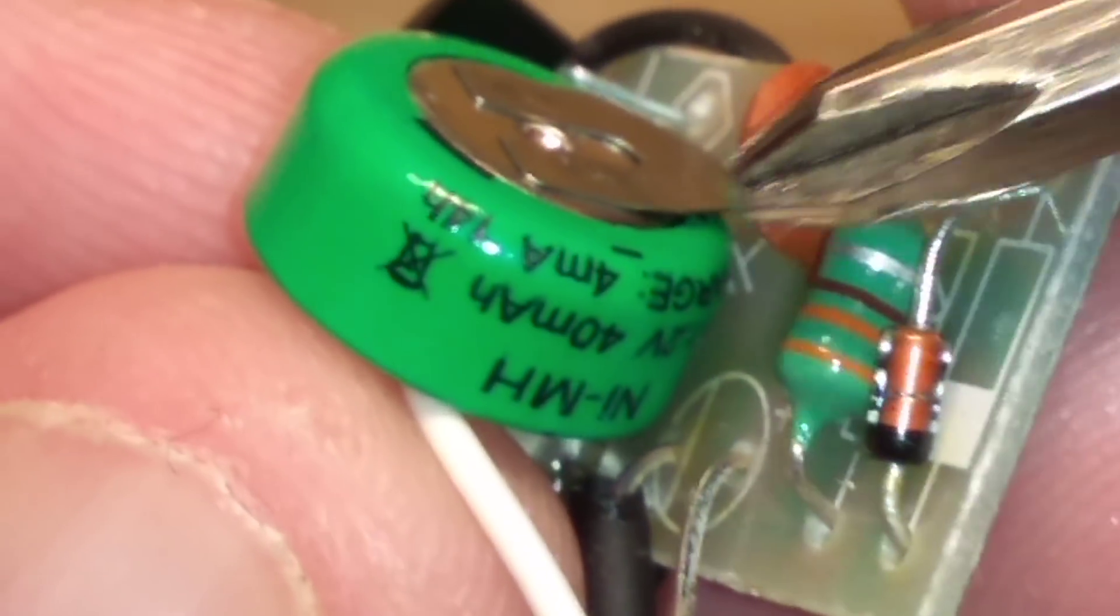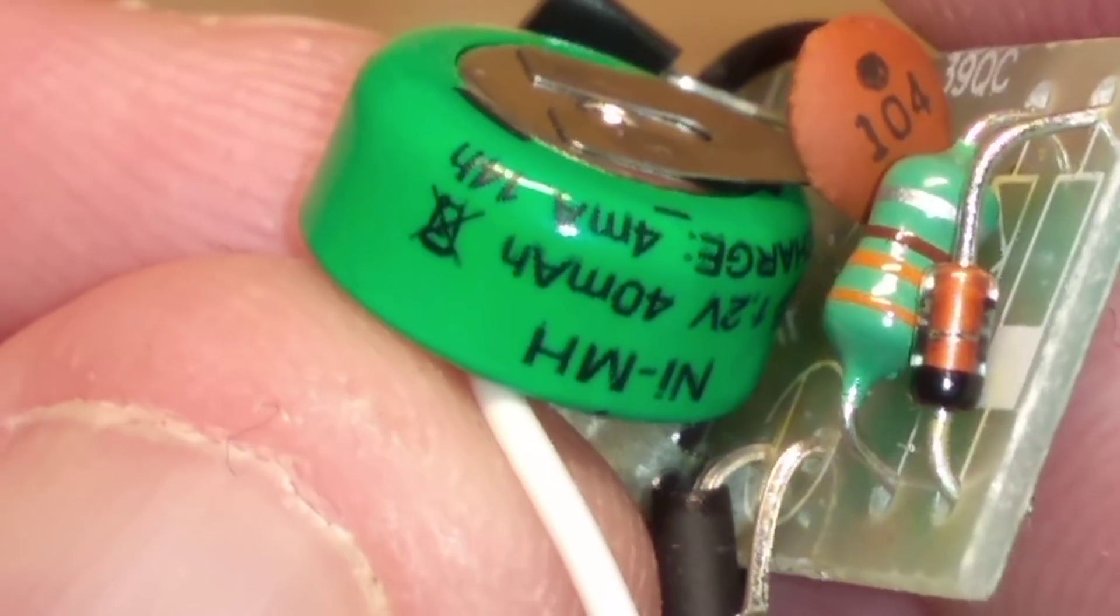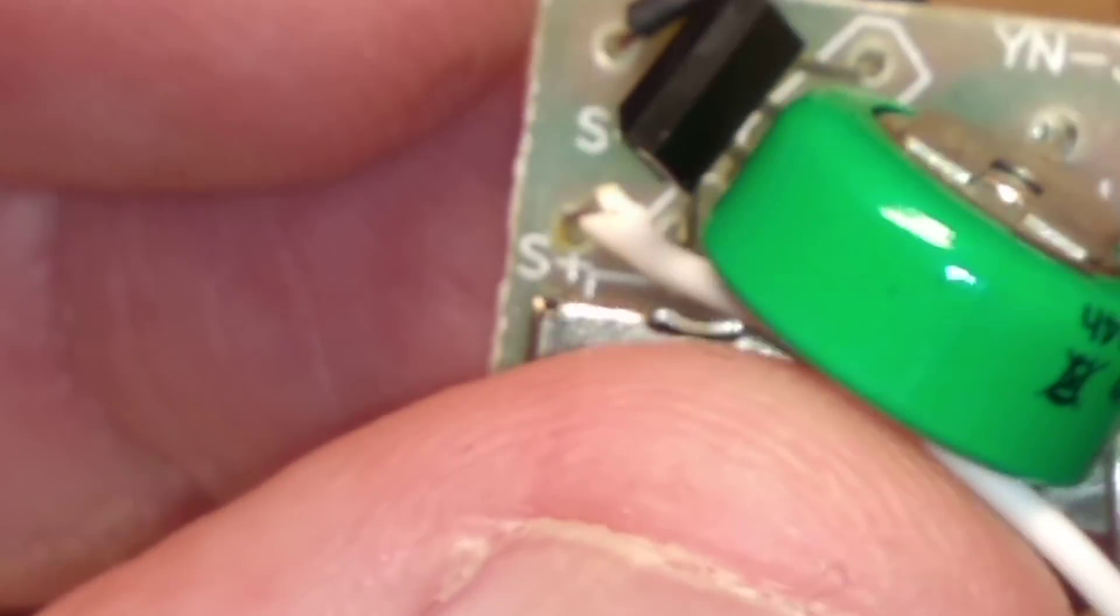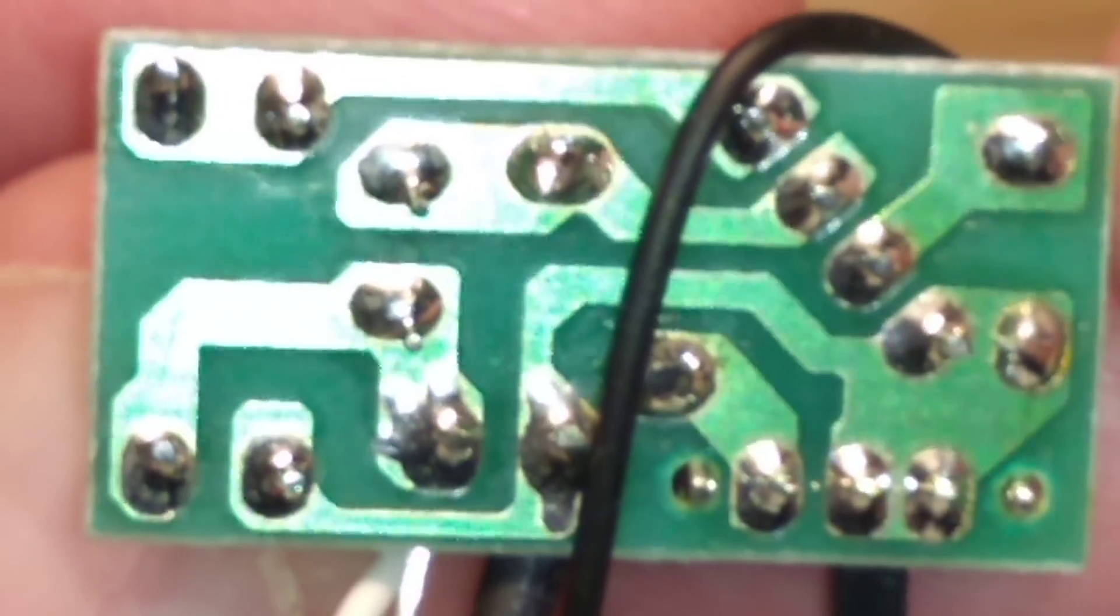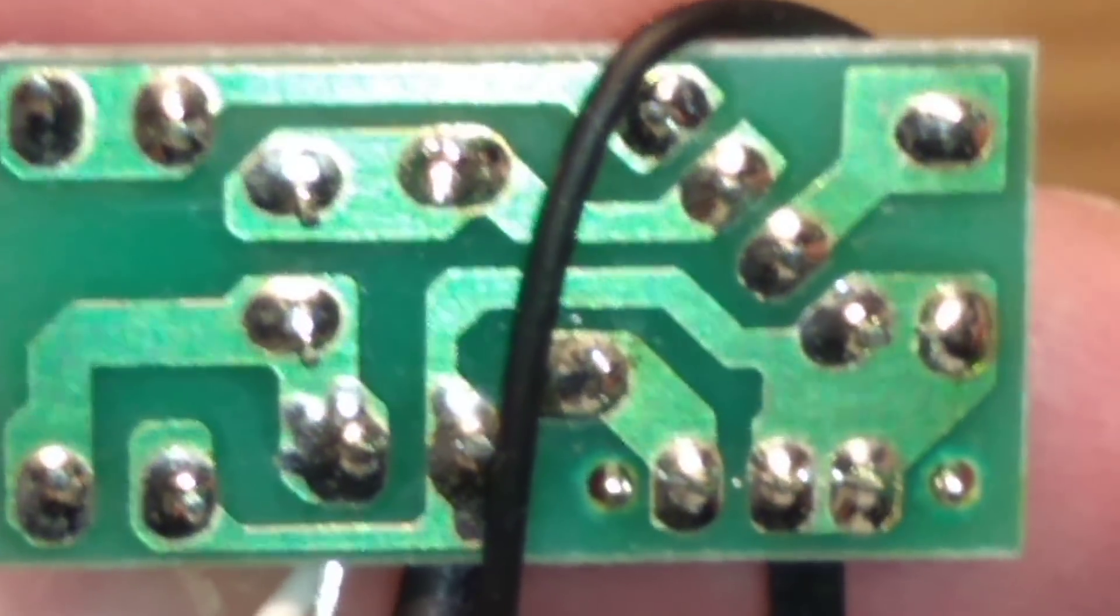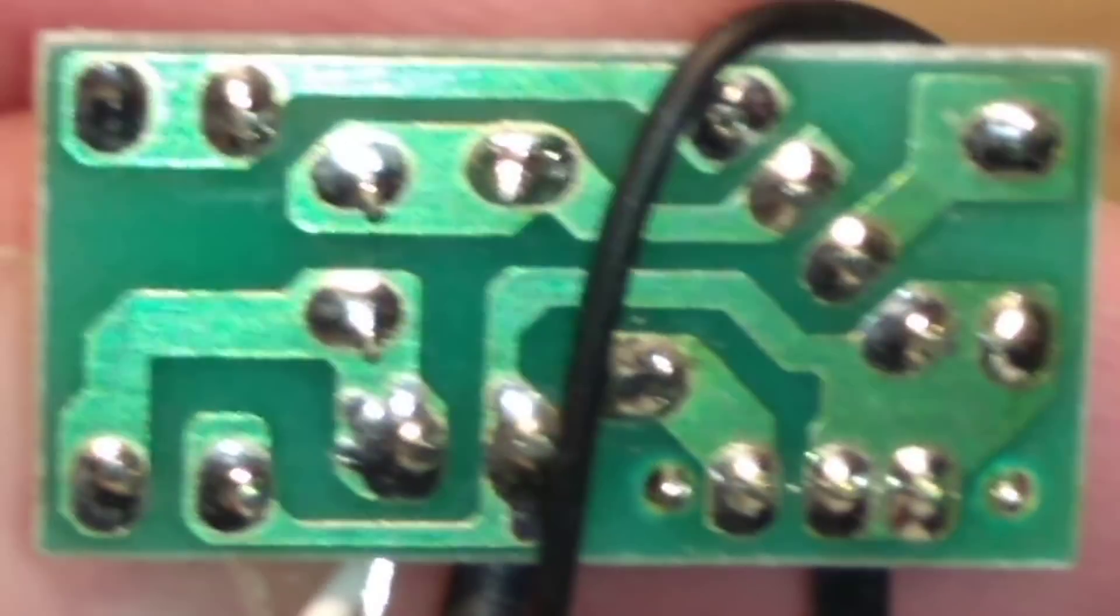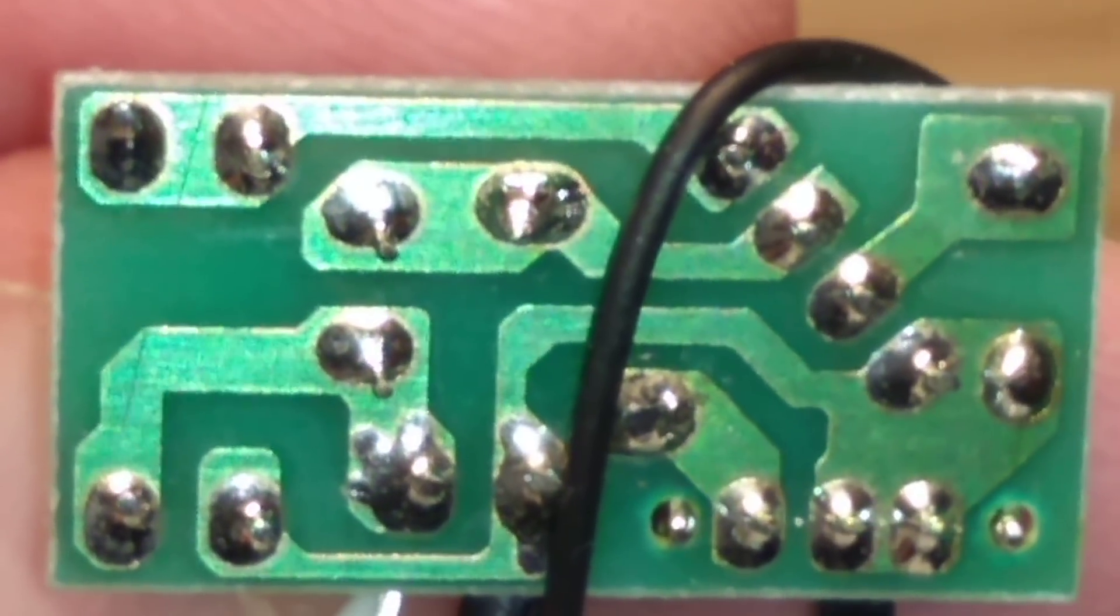The nickel metal hydride cell is rated 1.2 volt 40 milliamp hour, very typical of these. And the switch, and that's about it. And then of course we've got the circuit board underneath. I'm going to do a bit of reverse engineering and see if I can find that chip.